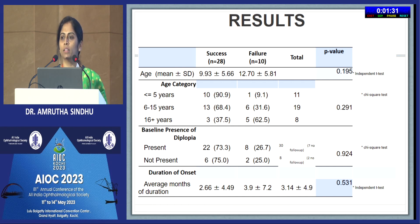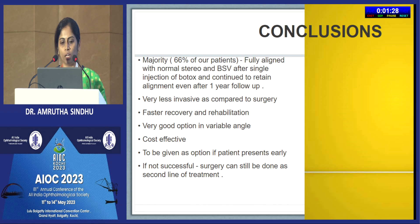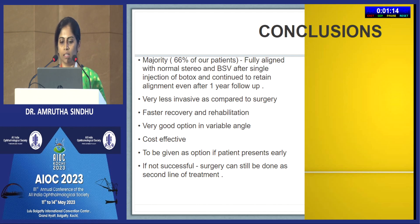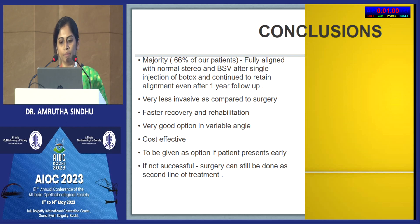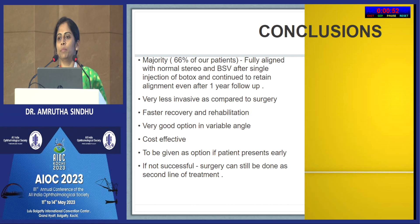Around 66% of patients got fully aligned with normal binocular single vision after a single injection of botulinum toxin and continued to maintain this alignment even after one year of follow-up. Botulinum toxin is less invasive as it does not disturb any anatomy, gives faster recovery and rehabilitation, and is a very good option for variable angle where we cannot decide the amount of surgery. It is cost effective compared to surgery and can be given as an option for patients presenting early. If not successful, we can always take up surgery at a later date.